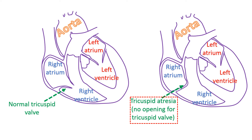Tricuspid atresia is a condition in which the wall between the right upper chamber and right lower chamber of the heart is absent. The right upper chamber is known as the right atrium and it normally opens to the right ventricle, the lower chamber. The opening is guarded by the tricuspid valve. When the tricuspid valve is not open, the right ventricle does not receive any blood and is usually very small.